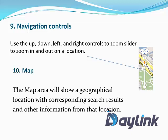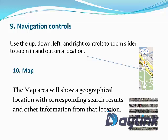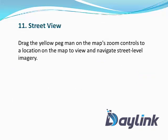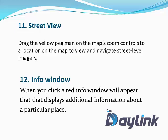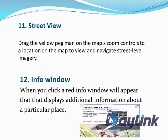Map. The map area will show a geographical location with corresponding search results and other information from that location. Street View. Drag the yellow pegman on the map's zoom control to a location on the map to view and navigate the street-level imagery. Info Window. When you click, a red info window will appear displaying additional information about that particular place. This is an example of the Info Window.